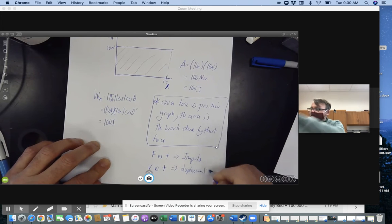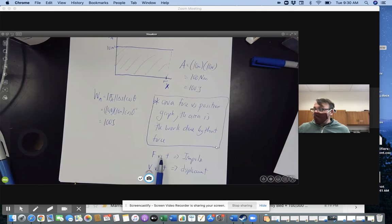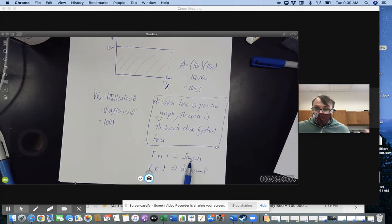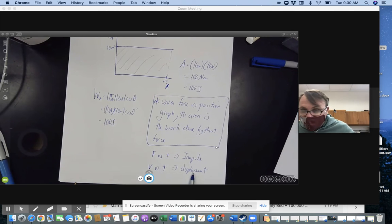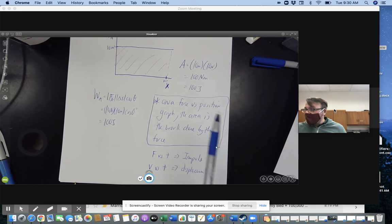Now, interestingly enough, notice force versus time, the area is impulse, which is the change in momentum. And here, this is the velocity versus time graph, and the area is the displacement, which is the change in position. And here, I have a force versus position. The area is the work, and work is the change in the energy. That's interesting.